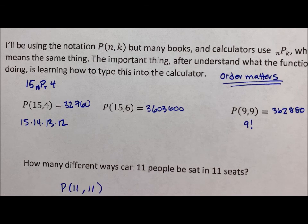It's also could be 11 factorial. Again, when these numbers are the same, it's the same as the factorial. And so this ends up being 39,916,800.